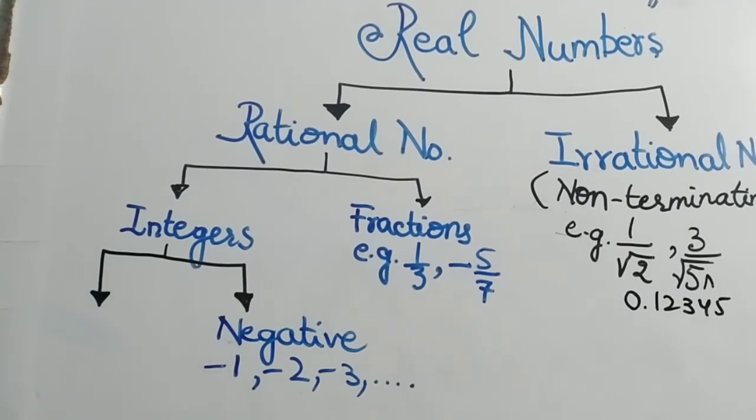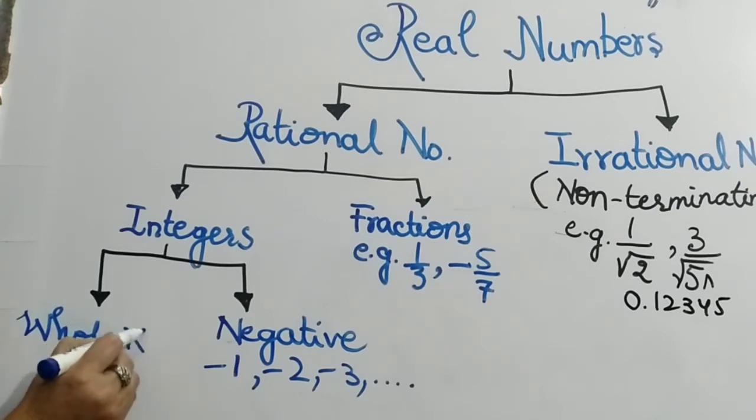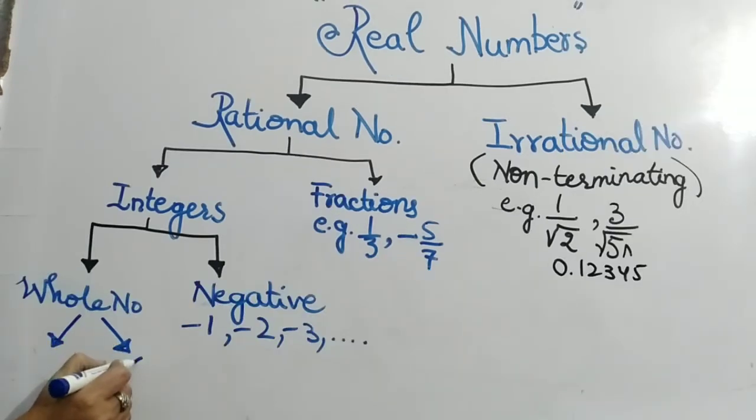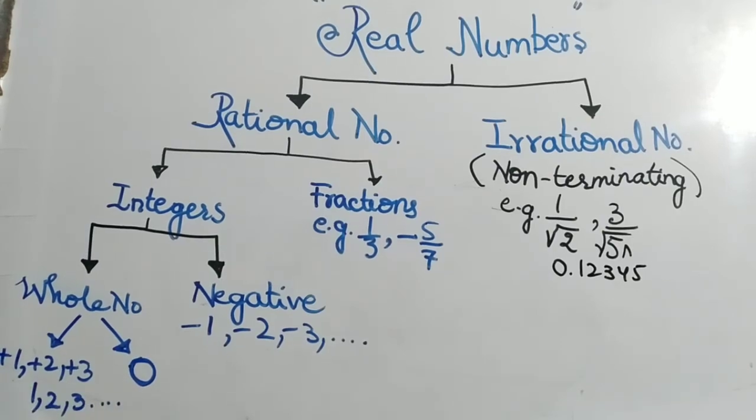There are negative integers and we have whole numbers. Whole numbers, you know that it starts from 0. Whole numbers are included. And positive numbers: 1, plus 2, plus 3, which we normally write 1, 2, 3. This is our counting.